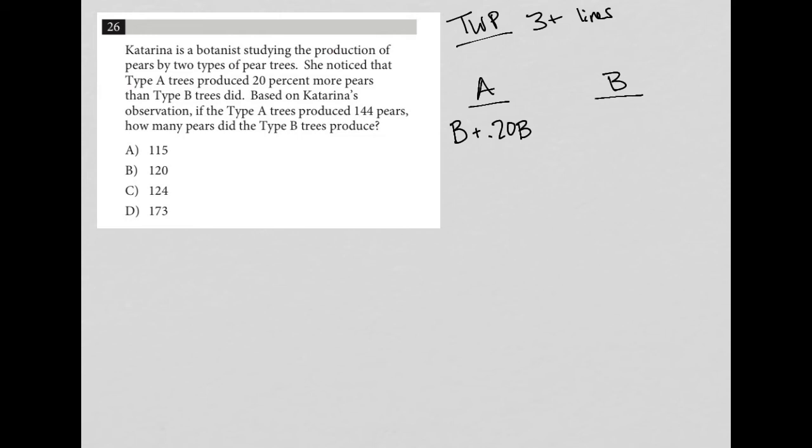Based on Katarina's observation, if the type A trees produce 144 pears, right, so I'll put this under my A column, 144, how many pears did the type B tree produce? So I have a question mark here.